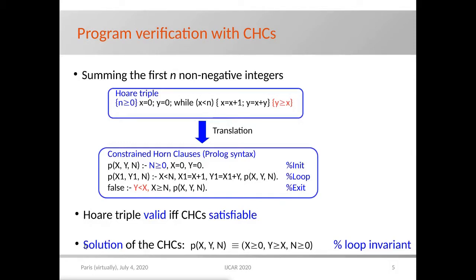The Hoare triple is valid if and only if the constraint horn clauses are satisfiable. Now, by a constraint horn clause solver, we can compute a solution which implies that the clauses are satisfiable and also expresses the loop invariant in clause form.